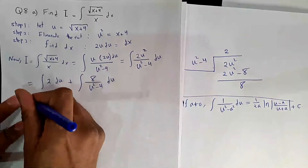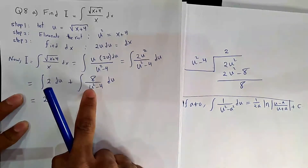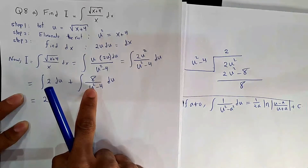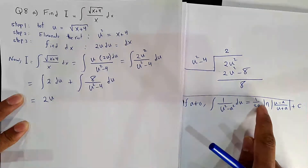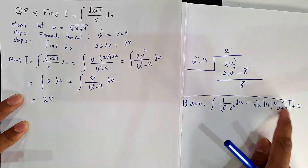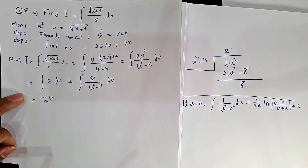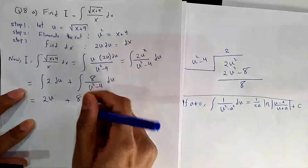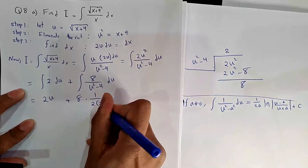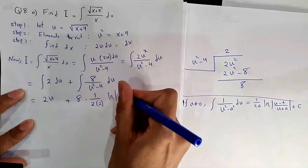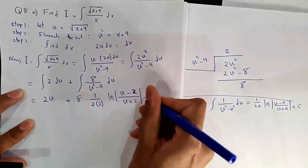The integral of 2 is 2u. For the integral of 1 over (u² − 4), we have a difference of two squares in the denominator. We use the formula: 1/(u²−a²) = (1/2a) ln|u−a / u+a|. Here a² = 4 so a = 2. Taking 8 outside, I multiply by 1/(2a) = 1/4, giving ln|u−2 / u+2| plus constant c.